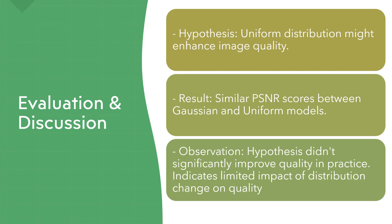However, the results show a similar score between both models, the Gaussian and the uniform, which was around 27 PSNR. This indicates that the change in distribution had a limited impact on the overall quality.